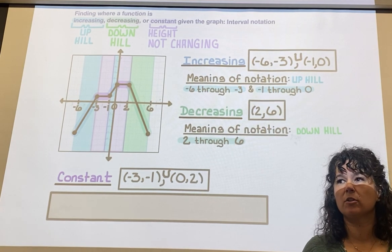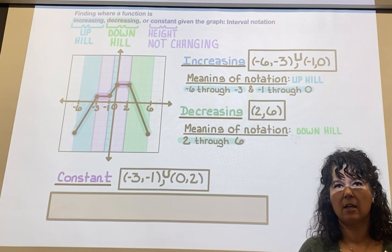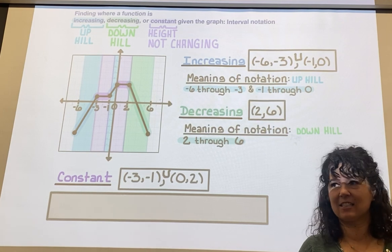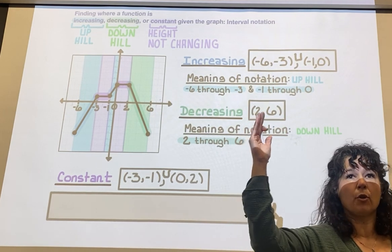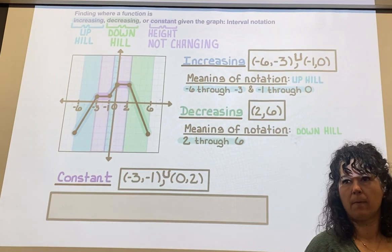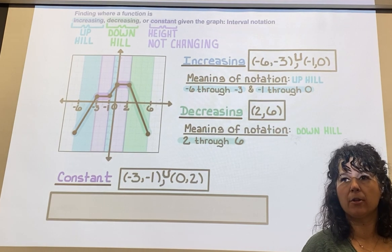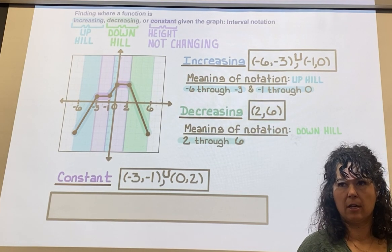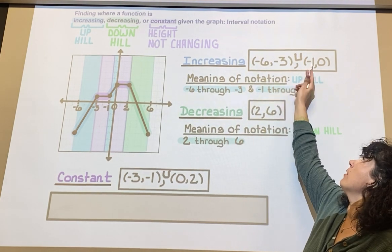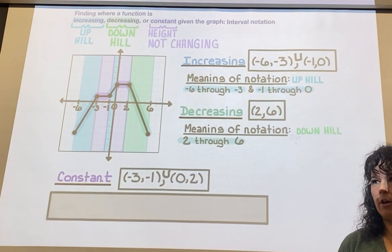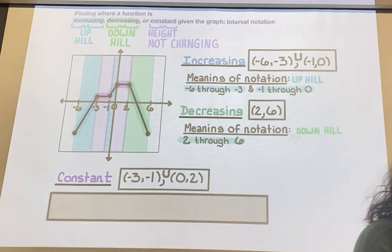But for you guys, just know use parentheses on all of these intervals - increasing, decreasing, and constant. You're looking at your x-axis to decide what number through what number you're going uphill, downhill, or straight across. And if you have more than one section, then you have a separate interval.